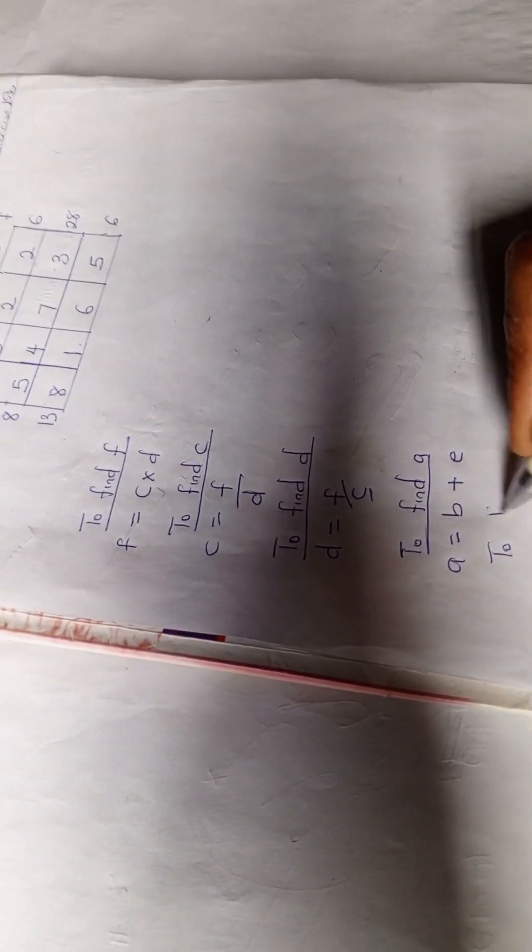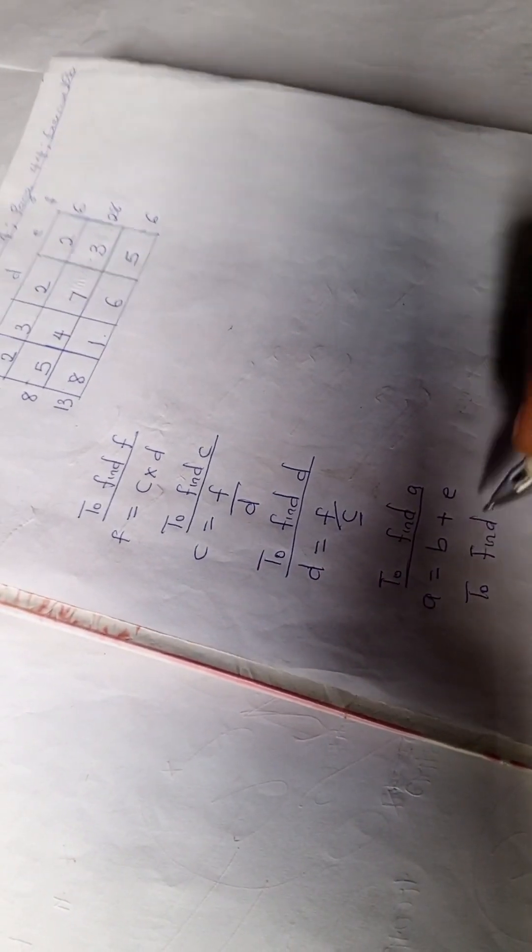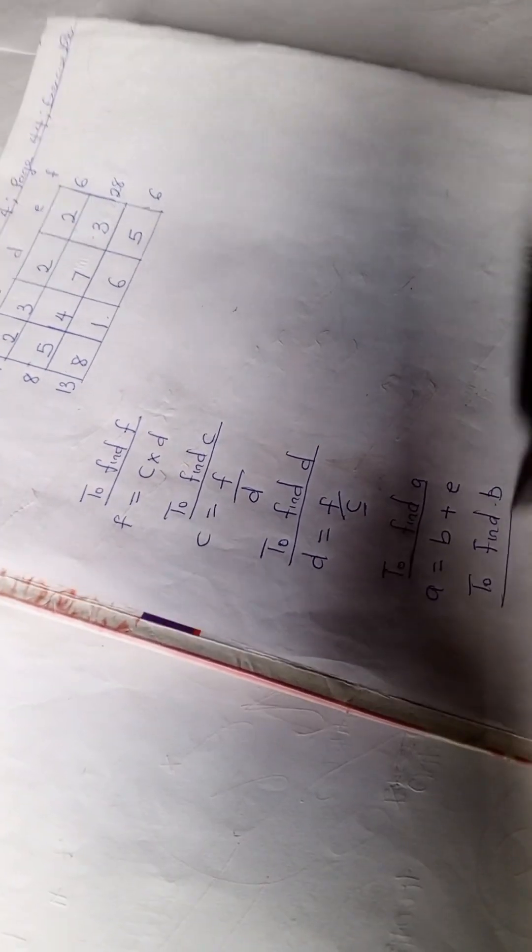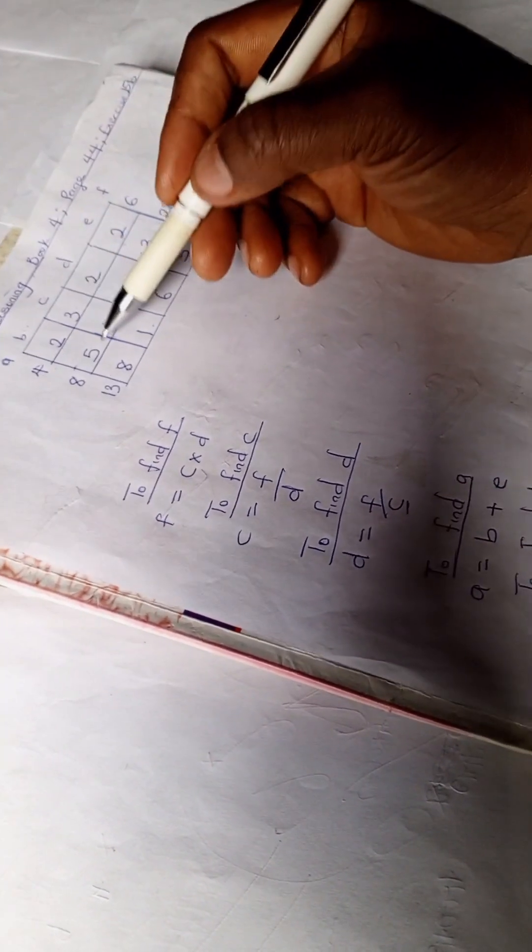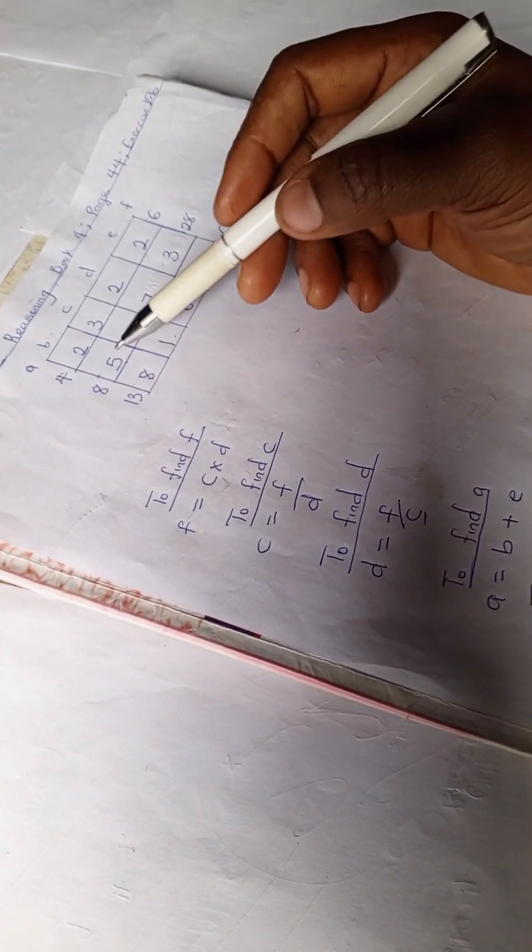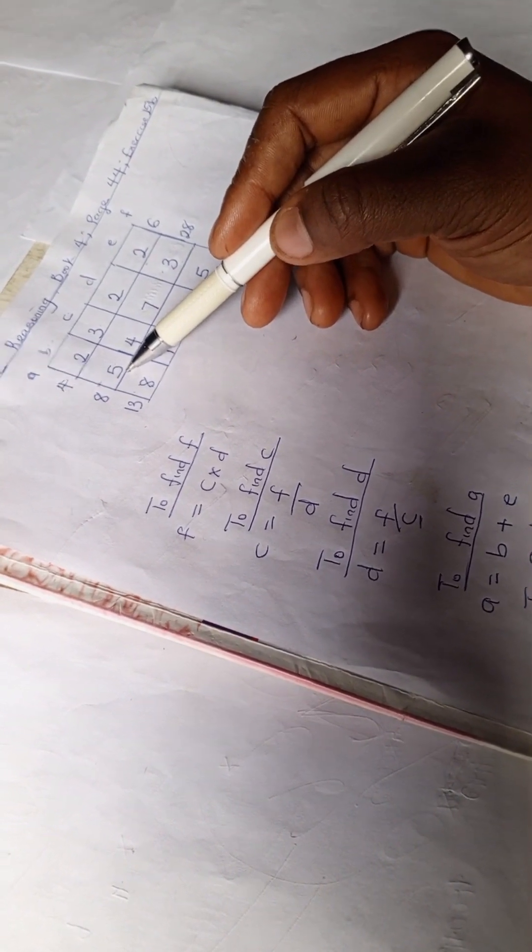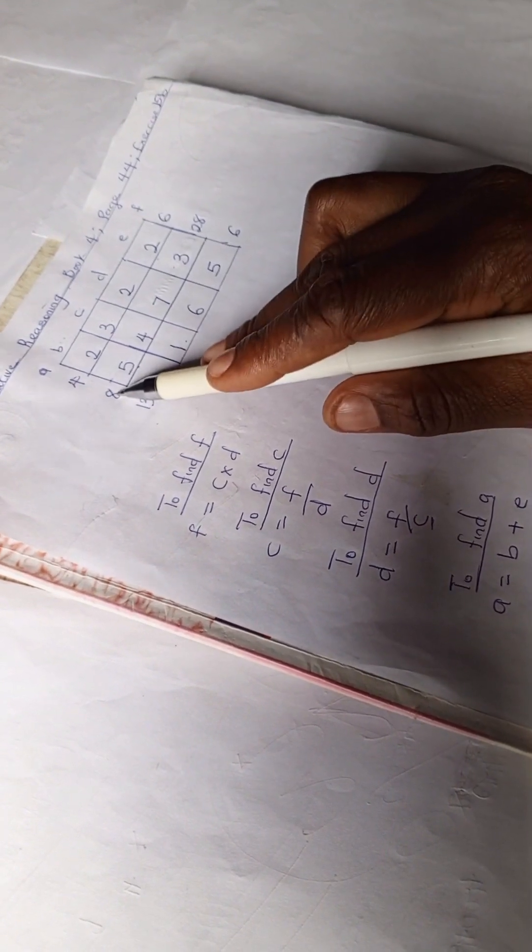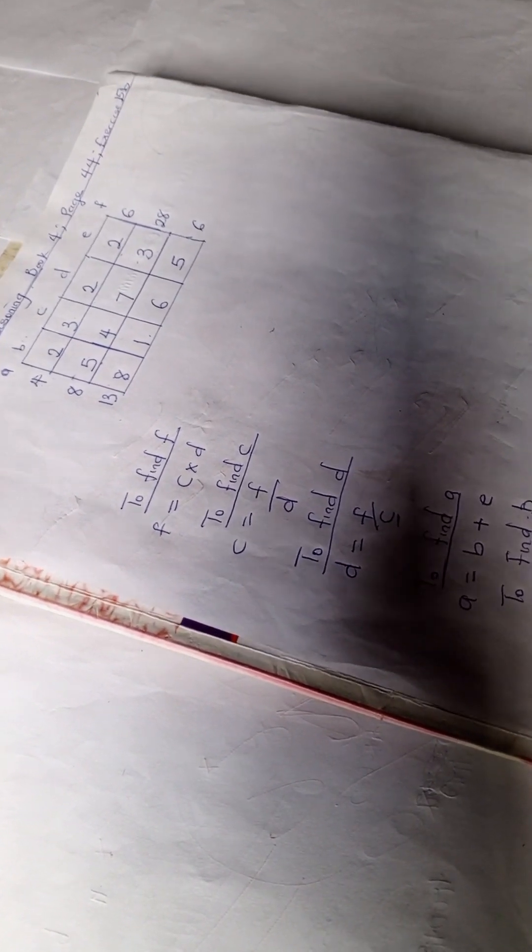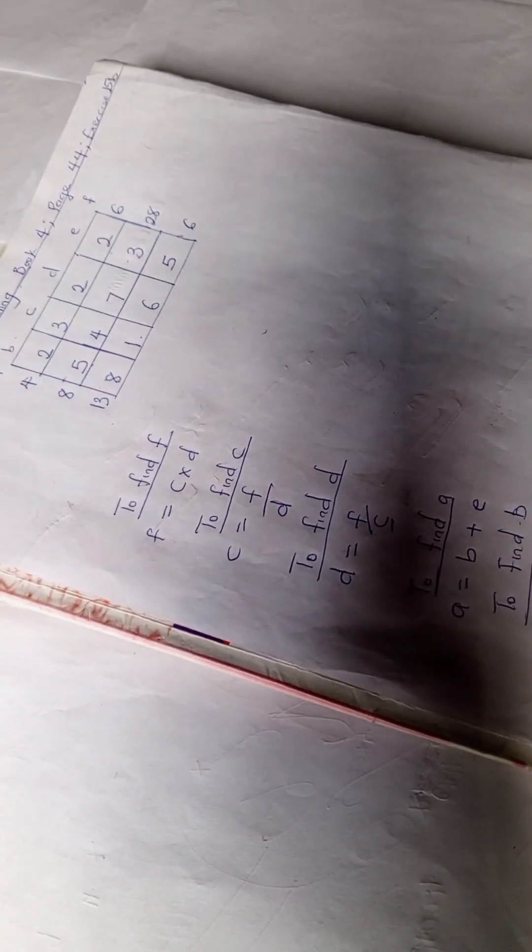And to find B, we have A. We have A, so we're going to find B. To get our B, we would say A minus E. A minus E, right? And to find E...